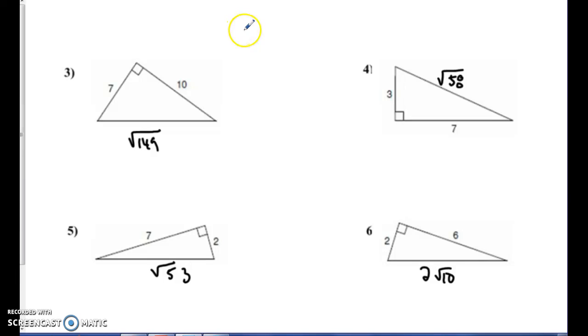Okay guys, so hopefully for number three you got square root of 149. Number four, you guys got square root of 58. Both those don't break down, so that's why I kept them like that.